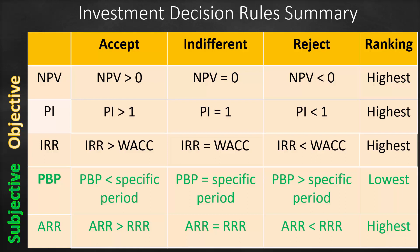When we have different projects and need to choose one, our ranking criteria are as follows: for NPV, we choose the highest; for Profitability Index, the highest; for IRR, the highest; for Payback Period, the lowest; and for Accounting Rate of Return, the highest.